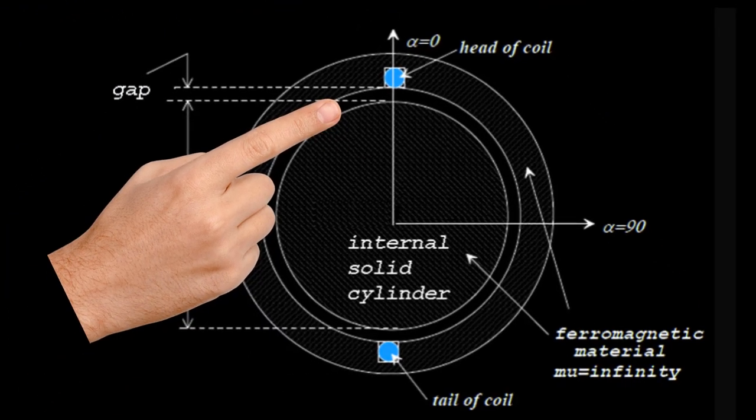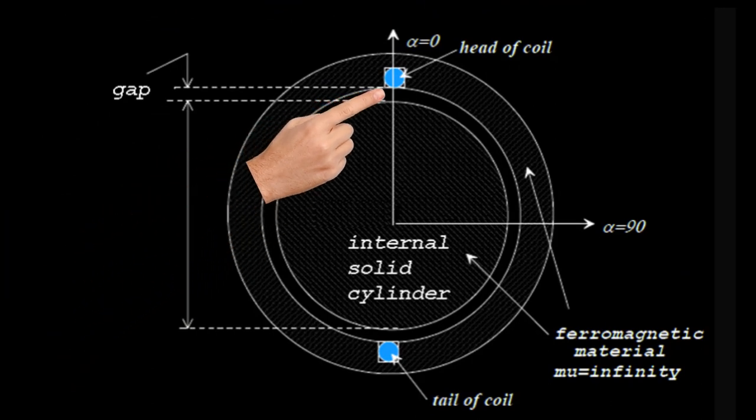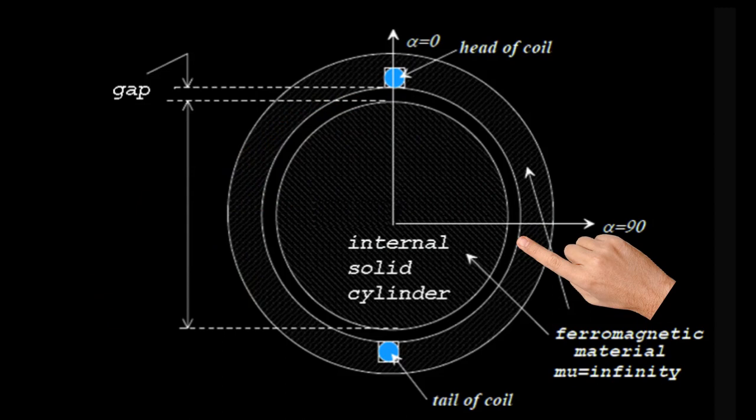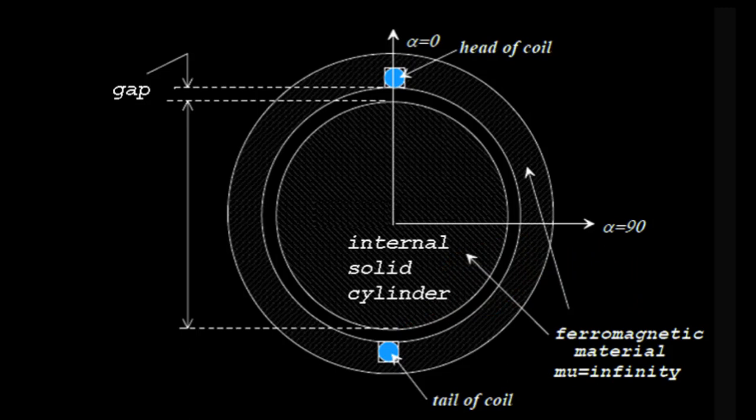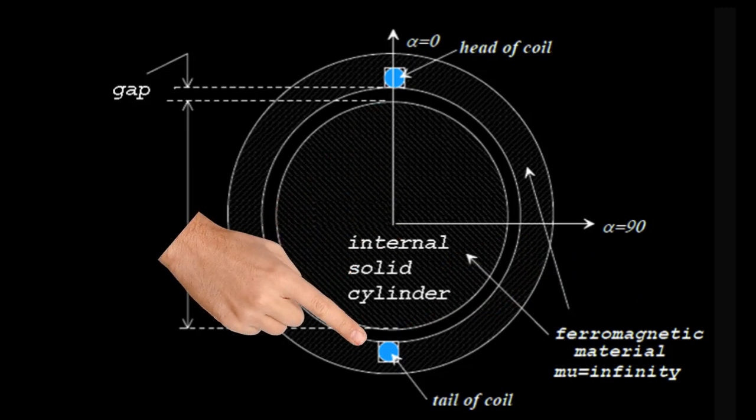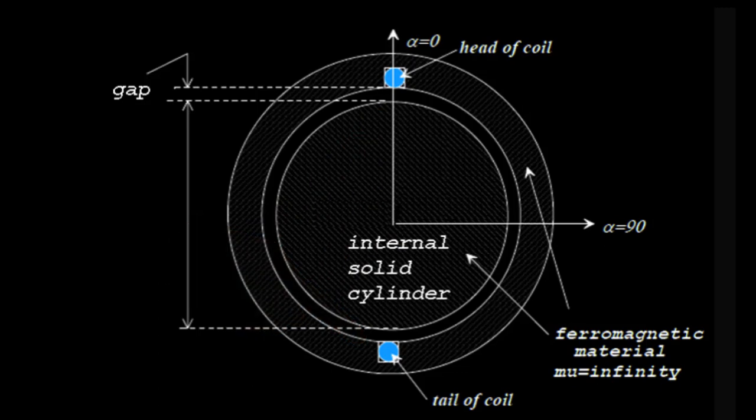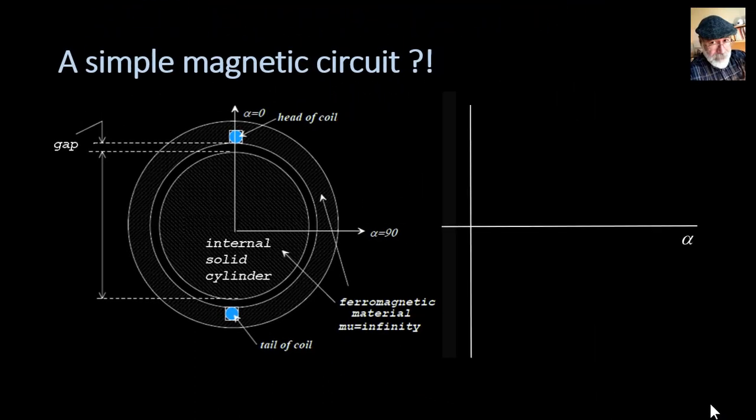To identify the points along that air gap, we make reference to that system of reference alpha zero at the top, 90 degrees here on the right, 180 degrees at the bottom. We carve two slots on the inner side of the outer hollow cylinder and in those two slots we set a coil with n turns and current I. That current in that coil will create a magnetic field in the air gap that looks like this.